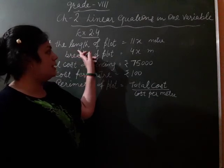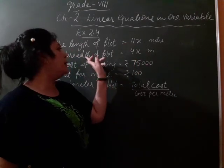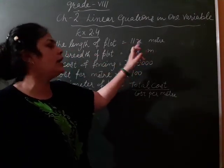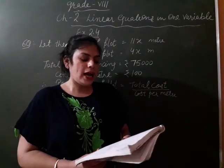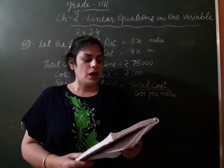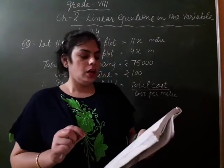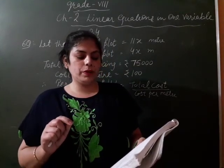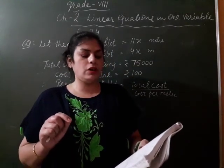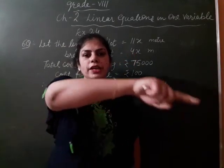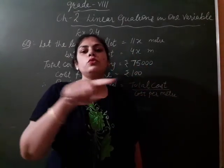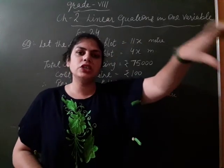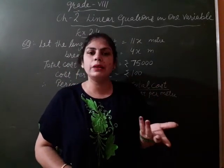So, its dimension length is 11x and breadth is 4x. We apply any variable with the ratio value. And at the rate of Rs. 100 per meter, it will cost the village Rs. 75,000 to fence the plot. Fence means we have to find its perimeter. Fencing means we have to find its perimeter.